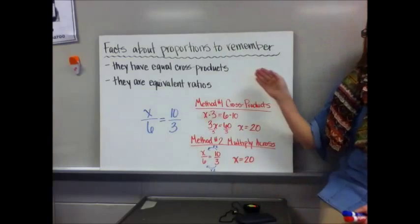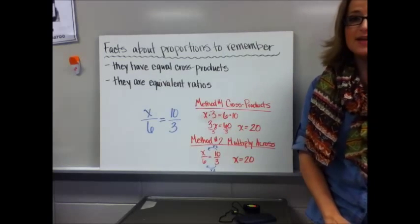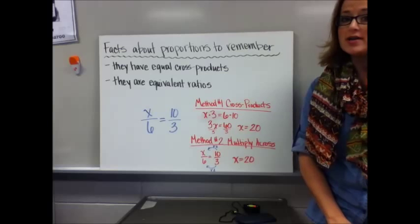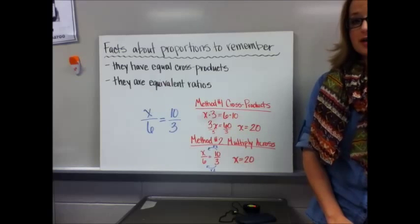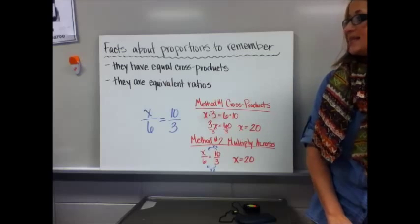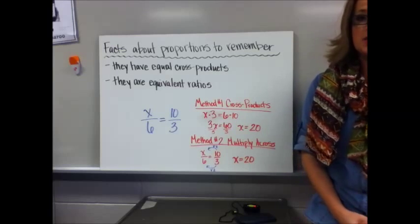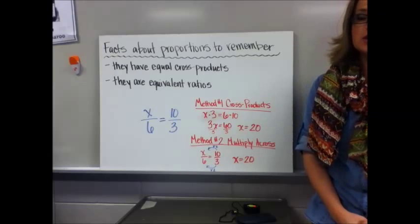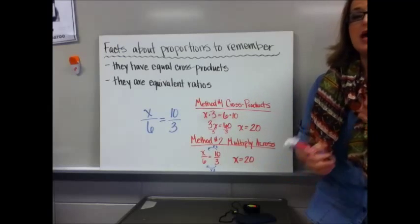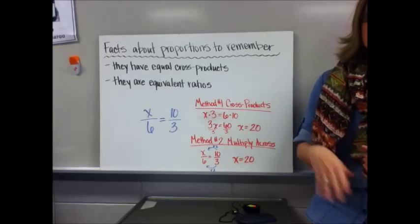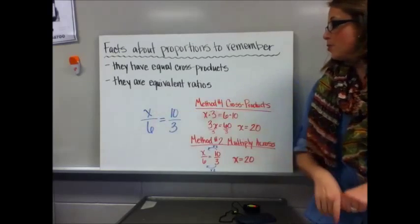Some facts about proportions to remember from the previous lesson: first, they have equal cross products, meaning that when you multiply diagonally the products are equivalent. Secondly, at the core of its definition, they are equivalent ratios, so in order for them to look different but still be equivalent, there's something being multiplied across the rows of the proportion.